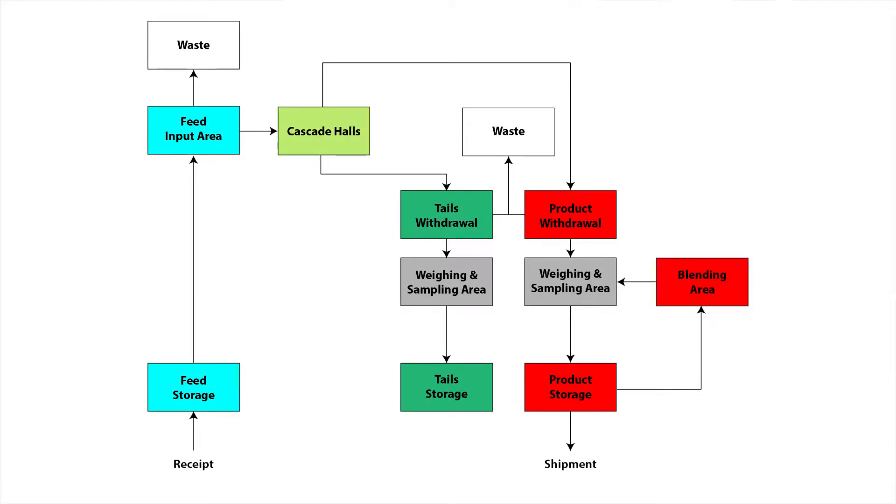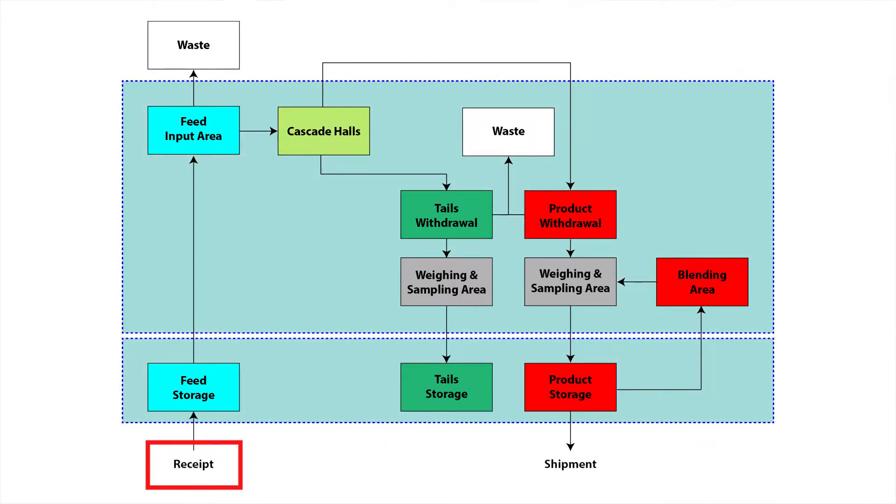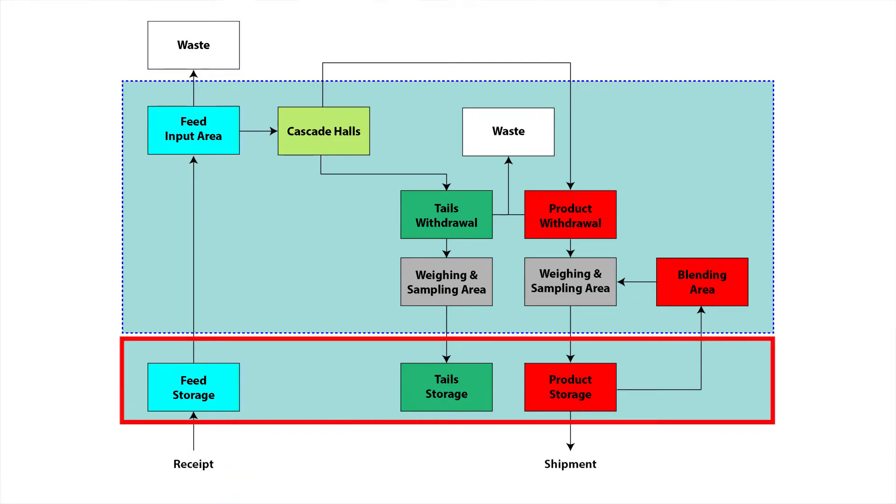If we look at a simplified uranium enrichment plant diagram, we see that the material is received here. In general, safeguards for uranium enrichment facilities are based around two broad material balance areas. The first material balance area covers shipping, receiving, and any storage areas.